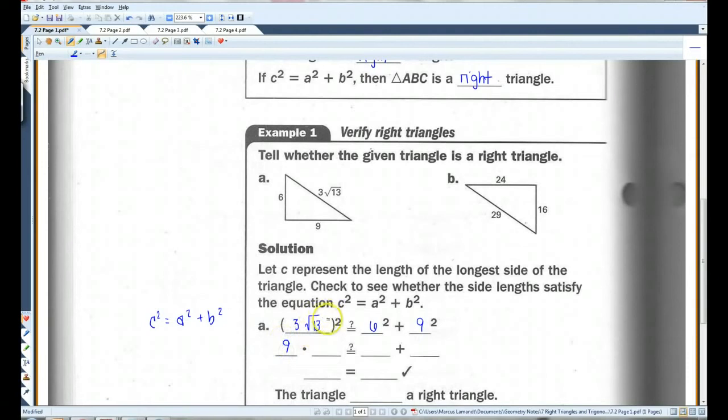Root 13 squared just removes the square root. 6 squared is 36, 9 squared is 81. 9 times 13, let's see here, 117. And if you add these two together, you get 117. It checks out, so the triangle is a right triangle.